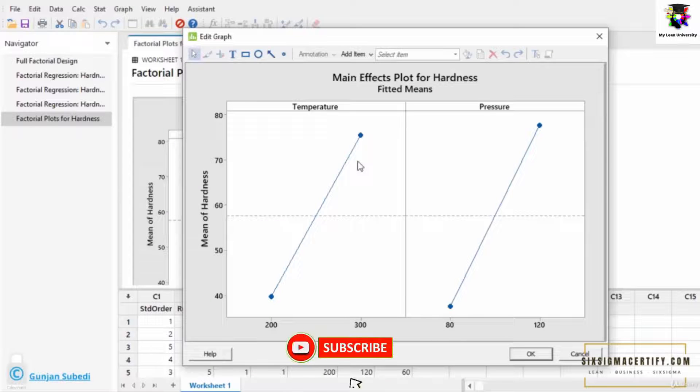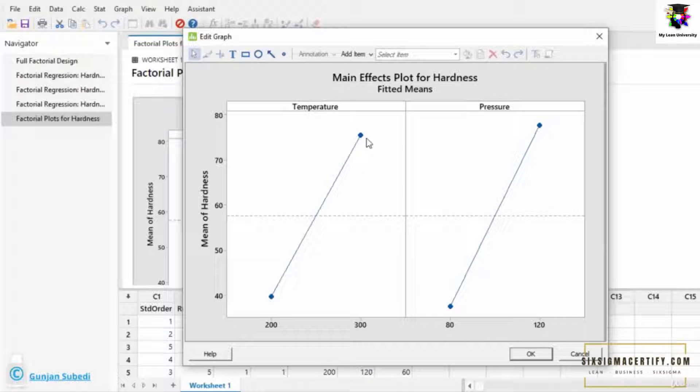First of all let me explain the main effects plot for hardness. The main effects plot for hardness shows you visually the effect of the different factors on the response. Here it shows that as you increase the temperature, the hardness of the plastic also increases.